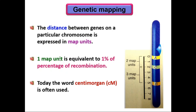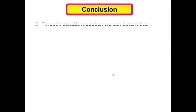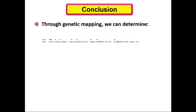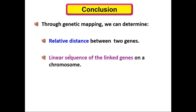There are three units used in genetic mapping: map units, percentage of recombination, or centimorgans. In conclusion, through genetic mapping we can determine two things: the relative distance between two genes, and the linear sequence of linked genes on the chromosome.